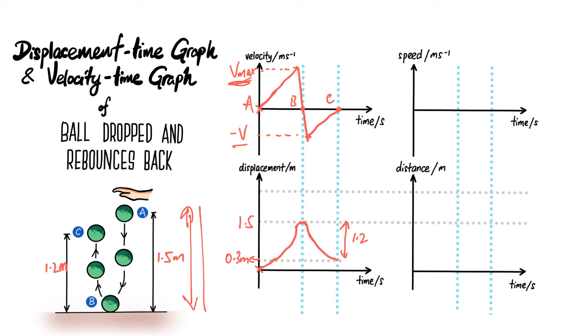As you can see, both graphs are consistent because as you travel from A to B is 1.5 meters. From the velocity-time curve, how you represent that is the area underneath the graph, which is a bigger triangle over here. When the ball rebounds back from B to C, the distance or height that is traveled is actually shorter. That's why this area here is smaller and is equivalent to 1.2 meters over here.